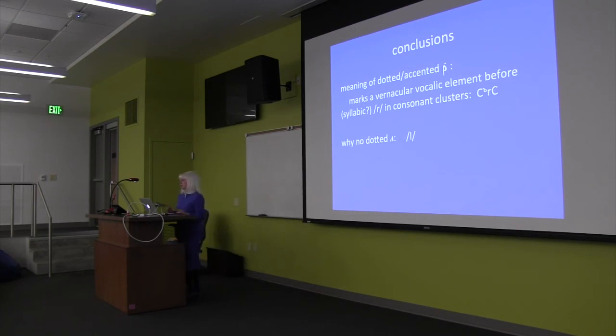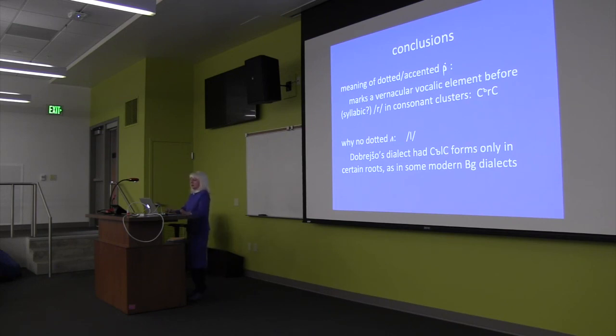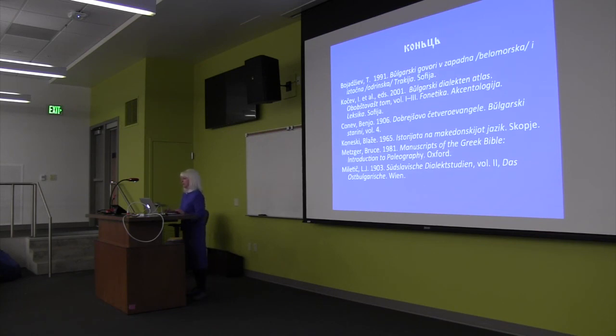So the meaning of the dot or acute accent over the rci in consonant clusters is that it marks a vernacular vocalic element of some sort before the R — whether it's actually a syllabic liquid or not, you can't really tell. The reason the vocalic element is indicated by a diacritic rather than the reduced vowel letter is probably because de Bratio was really striving to reproduce the OCS spelling, which he knew very well, while wanting to make a note to the reader that this looked unnatural. The dot convention was most likely adopted from Greek manuscripts. And that's the end — thank you for your attention.